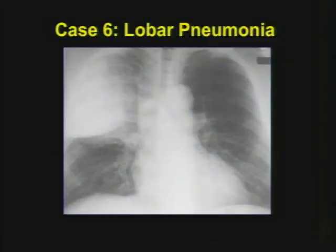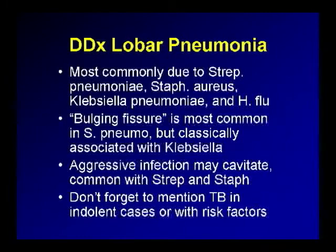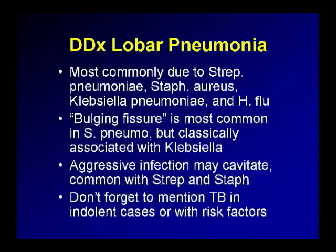Case number six: this is really bread and butter — lobar consolidation with somewhat bulging contours. Differential diagnosis for lobar pneumonia: the four most common are Strep pneumonia, Staph aureus, Haemophilus influenzae, and Klebsiella pneumonia. If you just took the top three, you'd probably cover 80% of community-acquired pneumonias. The bulging fissure sign is often attached to Klebsiella, but actually it's much more common with Strep pneumo. If you have a cavitary pneumonia, the two most common causes are Staph and Strep — but Strep infections are so much more common that if you had to put your money on the table, bet on Strep and you'll be right more often.